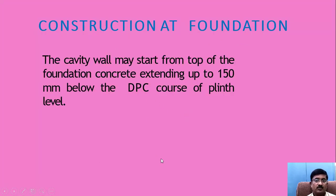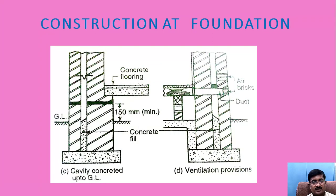Construction at foundation: the cavity wall may start from the top of the foundation concrete, extending up to 150 mm below the damp proof course at plinth level. At the foundation level, this continuous cavity is provided; the metal ties are provided here, and the damp proof course is provided for both leaves. Concrete filling is carried out up to ground level. For proper ventilation, air bricks and ducts are also kept.